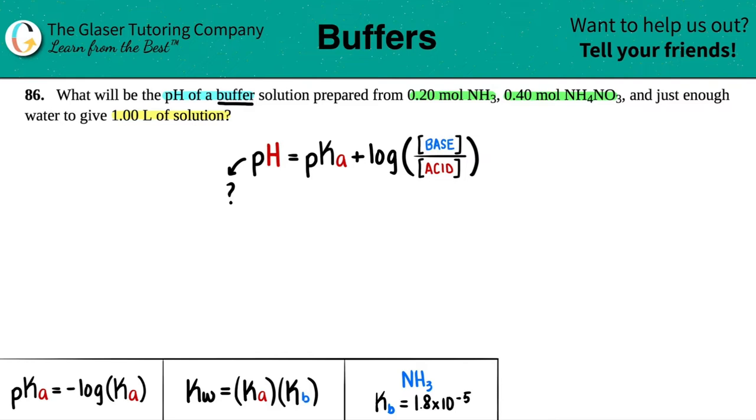In this case, they told us I had NH3 and then I have NH4NO3. Now this one is clearly one part of the buffer system. And if I look in my other component, NH4NO3, which one do I care about? Remember, conjugates are only different by one hydrogen.